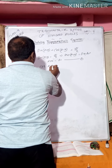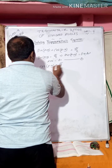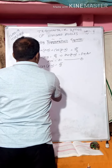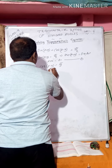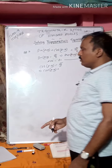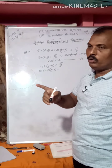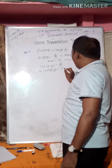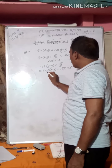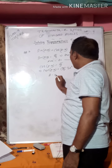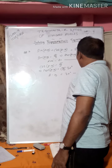Then cos(A-B) = √3/2. We know cos30° = √3/2, so cos cancels giving A - B = 30°. This is equation 2.